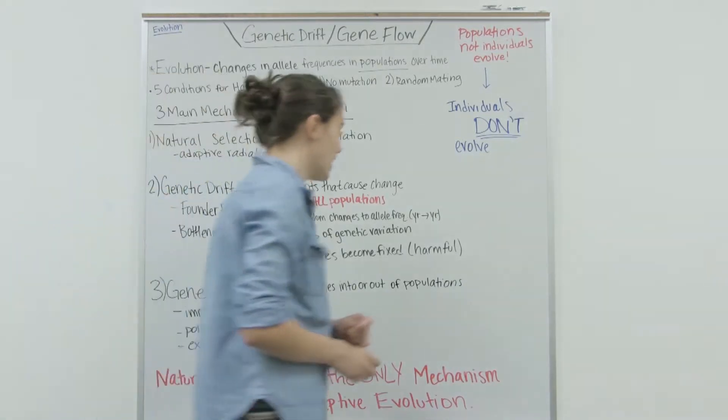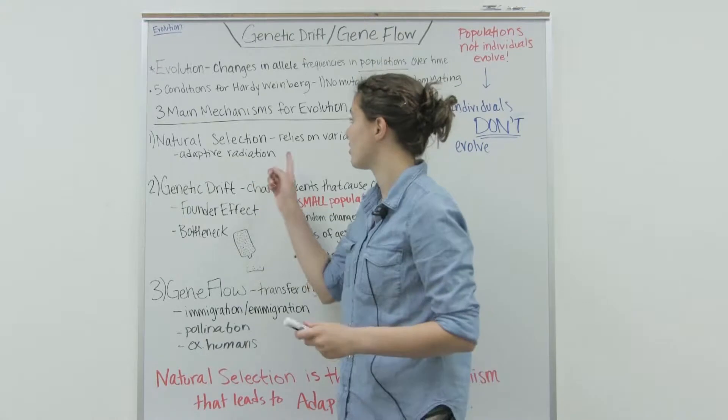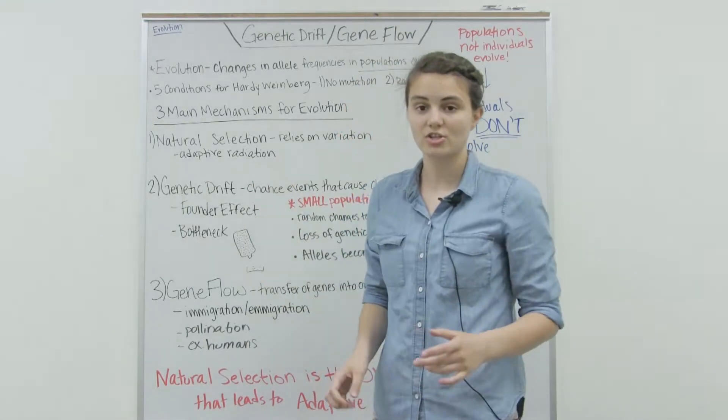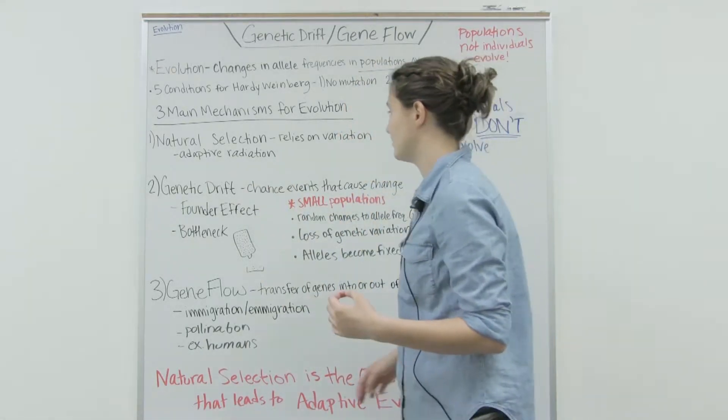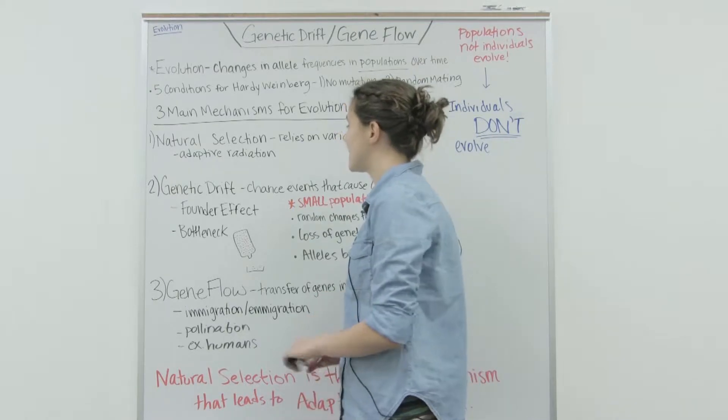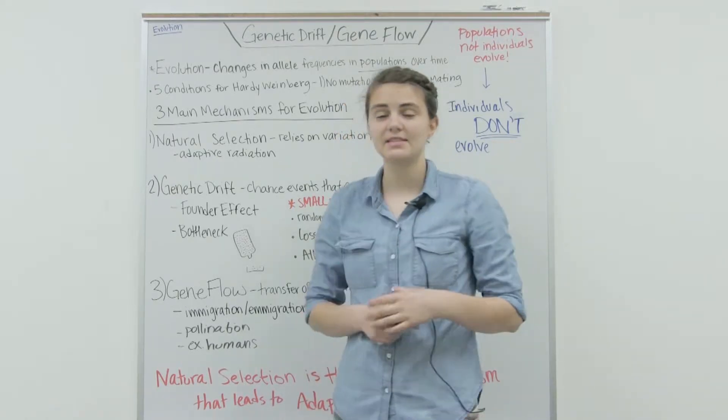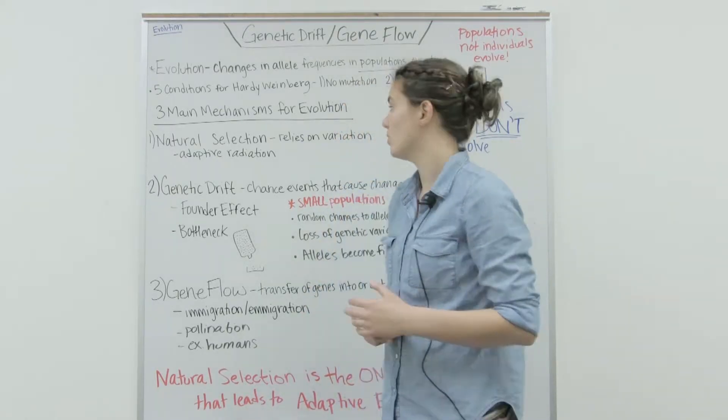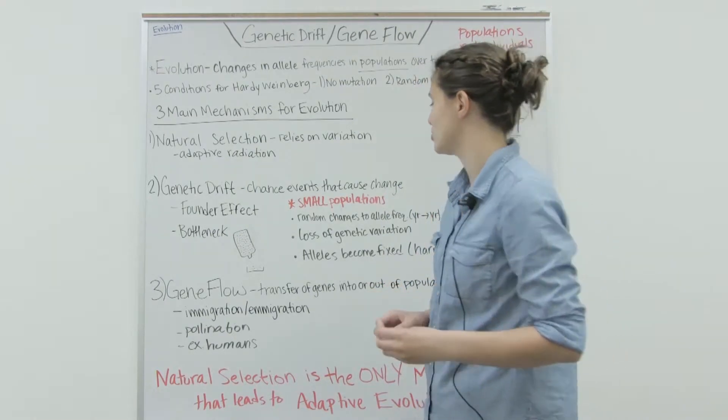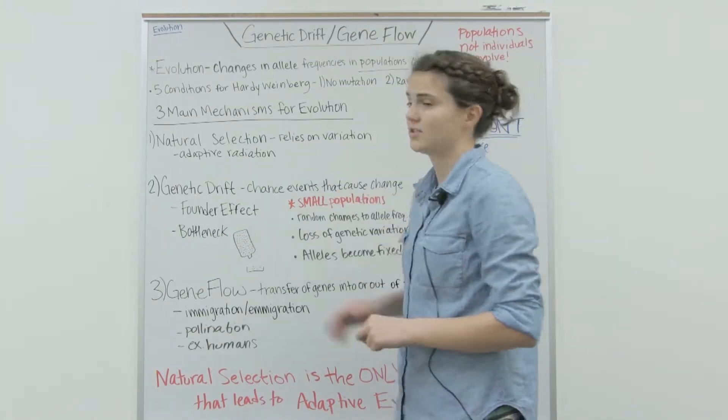The last three of the requirements for the Hardy-Weinberg equation are actually considered mechanisms for evolution. The first one was natural selection, the mechanism that Darwin proposed as the main mechanism for evolution.